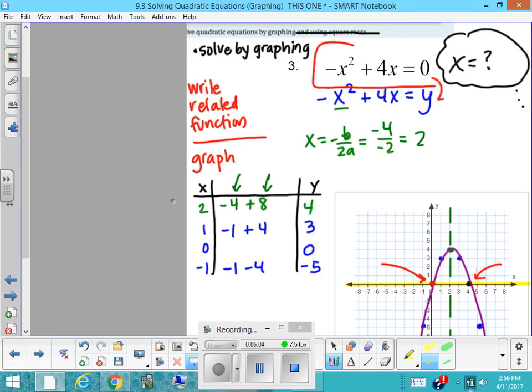Anywhere where the parabola crosses the x-axis will be a solution to the equation. So I see x equals 0 and x equals 4. So we now have two solutions for this equation, 0 and 4.